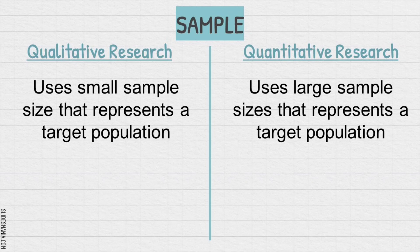Therefore, qualitative research typically ensures a smaller sample size because the focus is on gaining in-depth, detailed insights from a limited number of participants. The goal is to explore experiences, behaviors, and phenomena in a rich and comprehensive way. Quantitative research, on the other hand, generally needs a larger sample size because it aims to measure and analyze effects or relationships within a population. A larger sample allows for more reliable results.